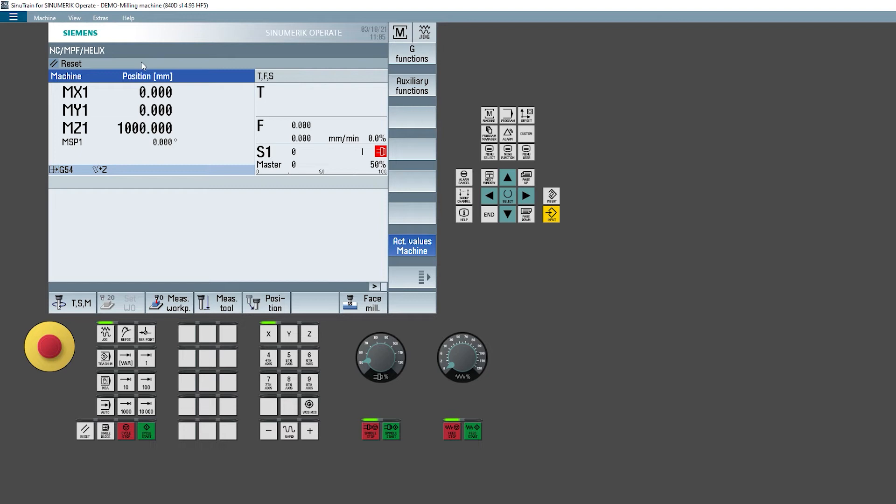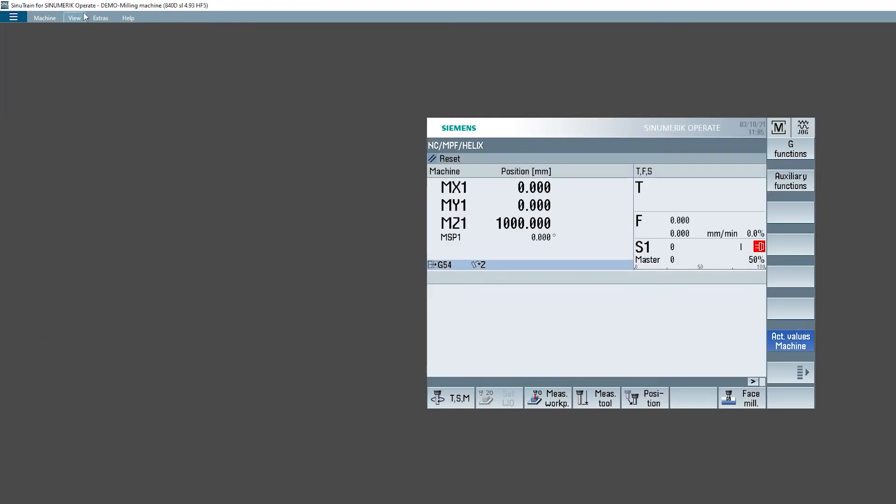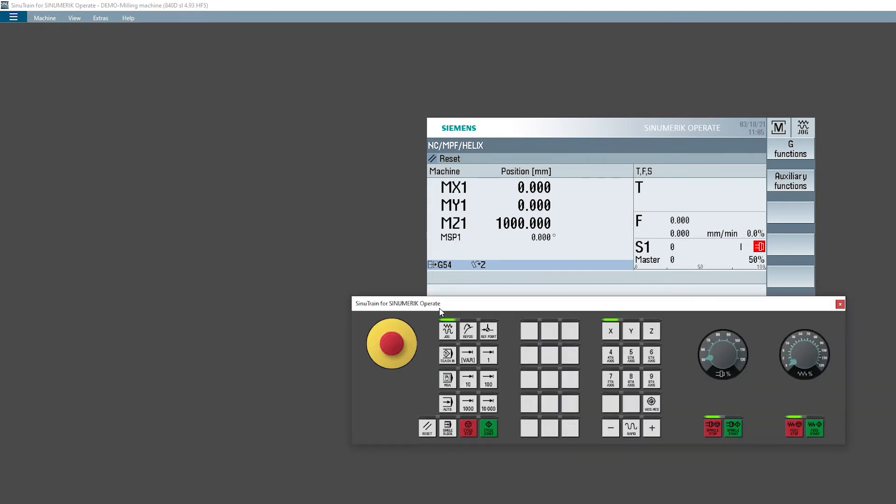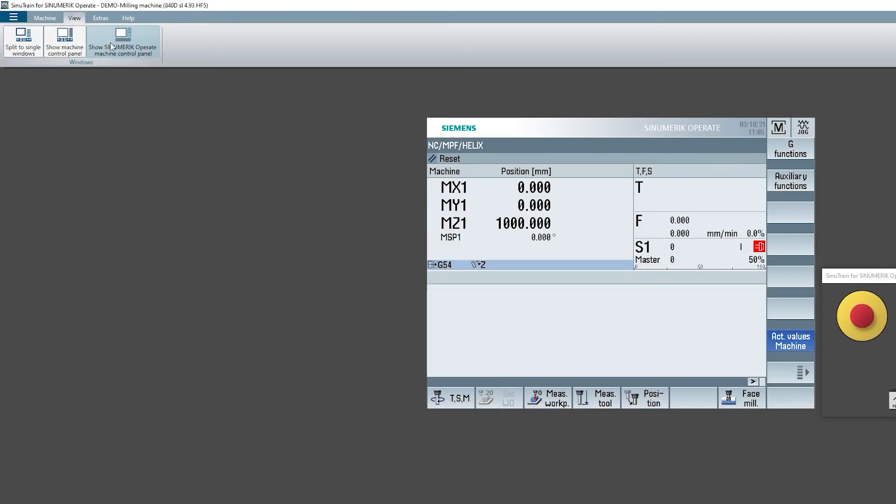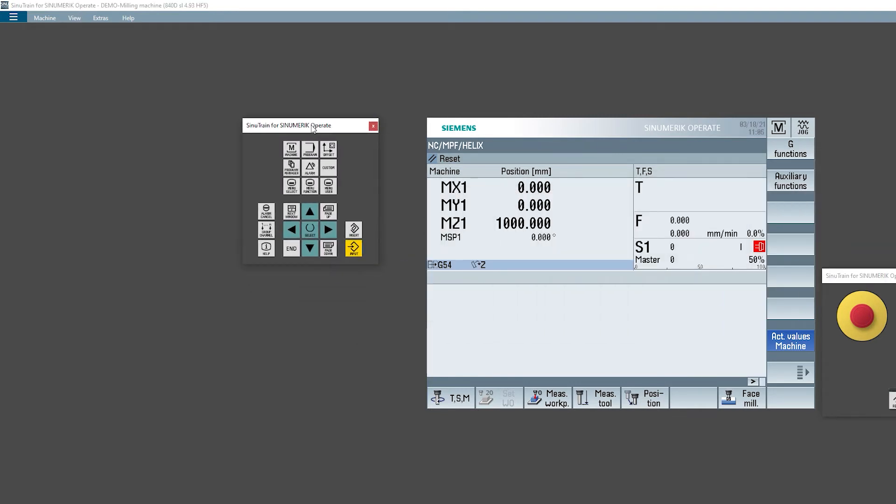If for example we are working with two monitors, it is possible to detach the Siemens control panel and the operator panel to have it in two separate windows and be able to place it where we prefer. To do this, click on the View menu and click on Split to Single Windows. At this point, to display the operator panel, click on Show Machine Control Panel and position the panel where you want it. To show the Siemens controls, click on Show Synumeric Operate Machine Control Panel and position it where you want it to.